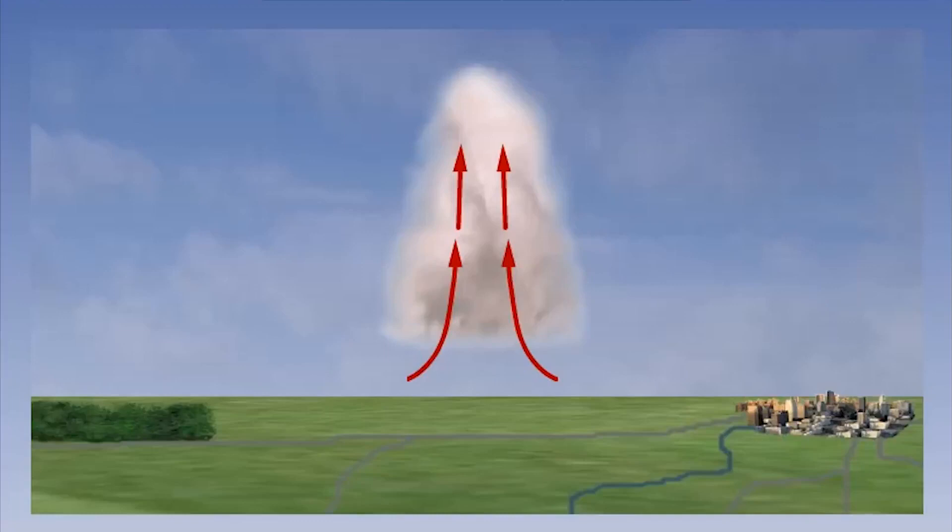Within the cloud, we can see significant vertical currents of air. These will disturb the general horizontal flow of air, creating turbulence.